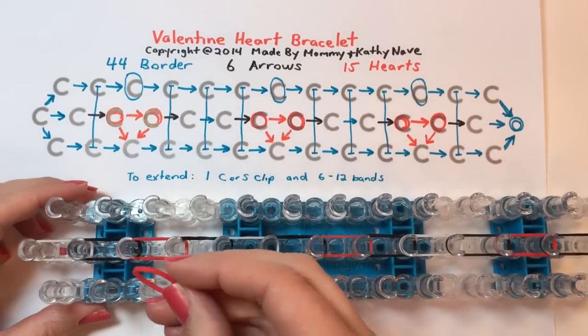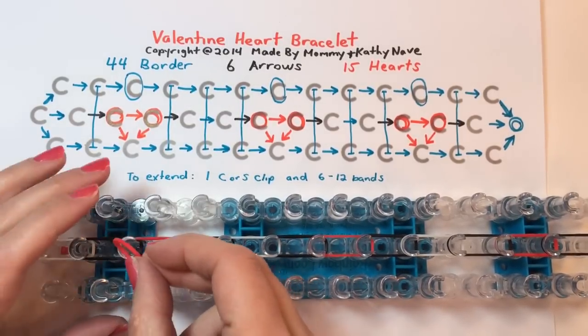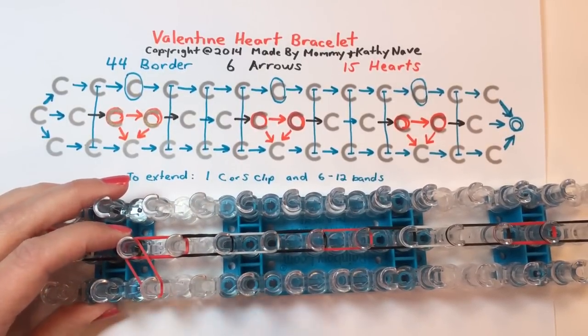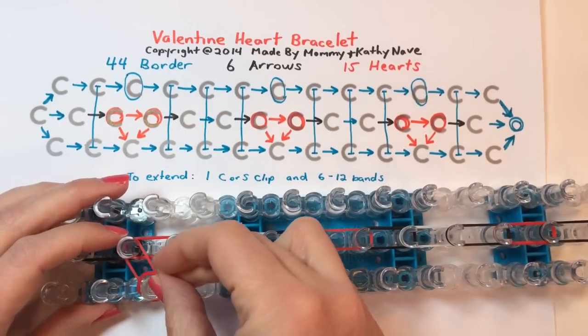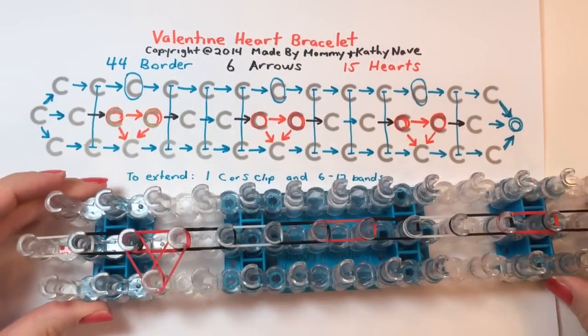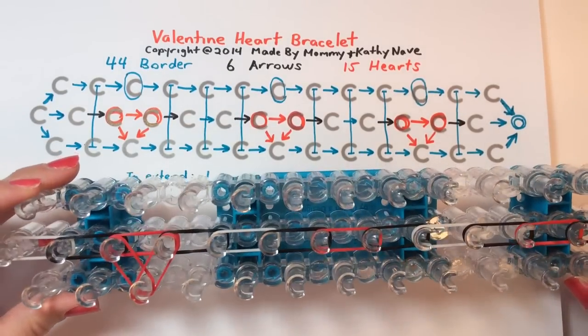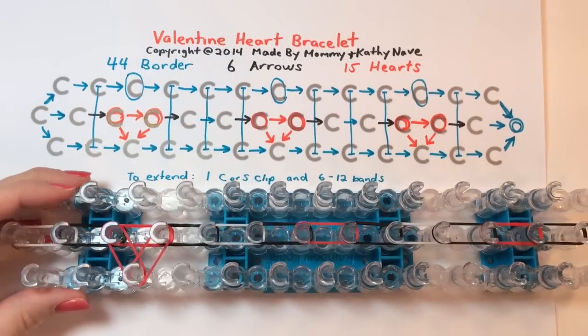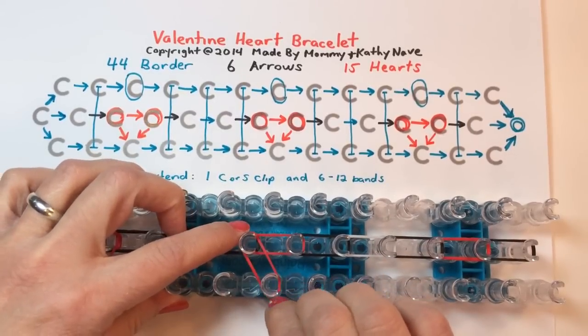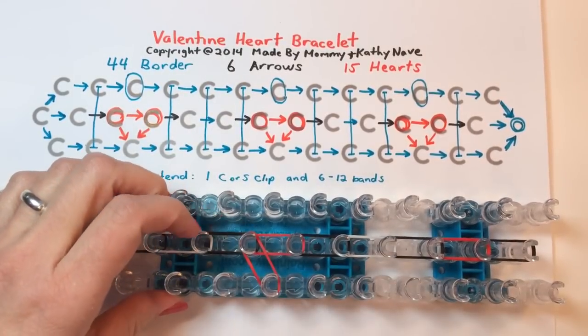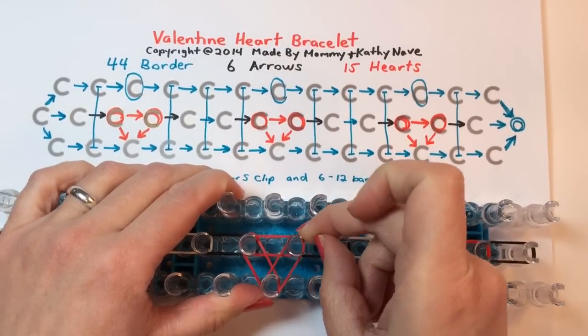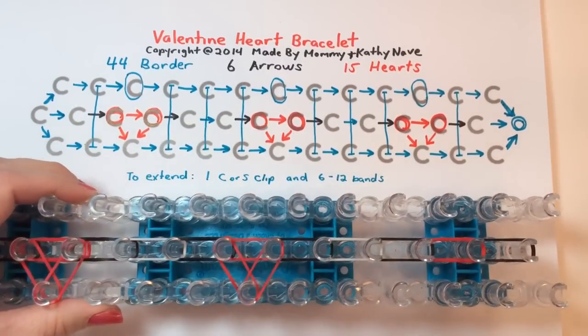So we're going to take a single red rubber band, or whatever your heart color is, from the left to the diagonal below, and from the diagonal up to the right, so that now you've formed a triangle where the heart will be, and we're going to repeat that for the two other hearts on the loom, from the left side of the heart, down to the right, and then from that peg back up to the right, and repeating again.